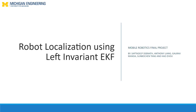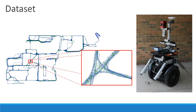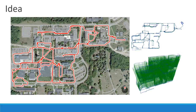Welcome to our presentation on robot localization using left invariant EKF. In this project, we implement the filtering algorithms on the University of Michigan North Campus long-term vision dataset. The idea is to use IMU measurements to predict the motion and then use GPS data to correct the motion.